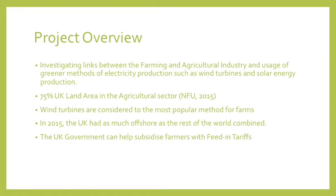Project overview. I wanted to investigate the links between farming and the agricultural industry and the usage of greener methods of electricity production, such as wind turbines and solar energy. 75% of UK land area was in the agricultural sector in 2015. Wind turbines are considered the most popular method for farms, and in 2015 the UK had as much offshore wind as the rest of the world combined.